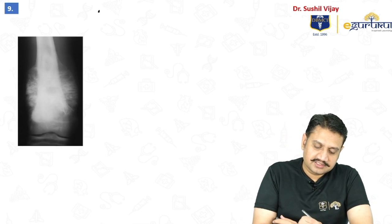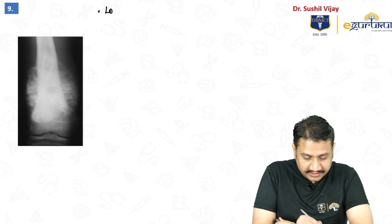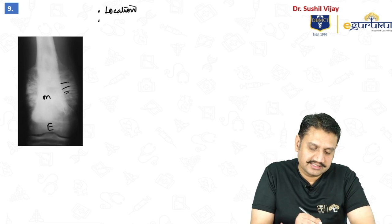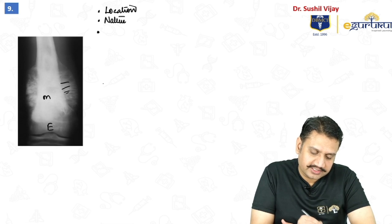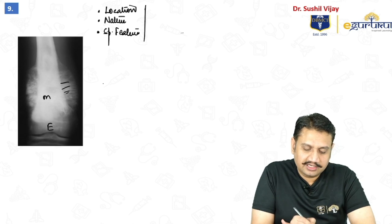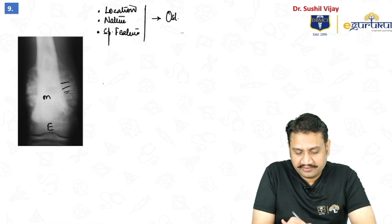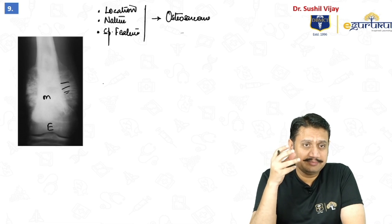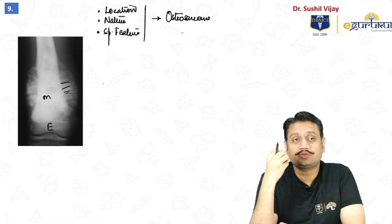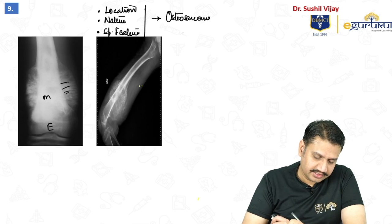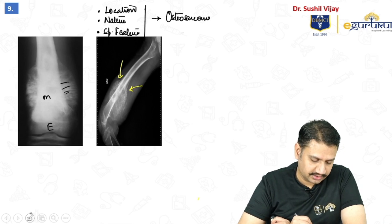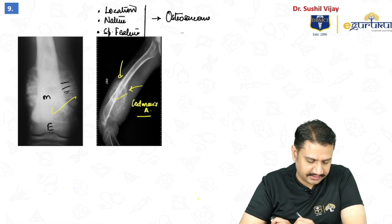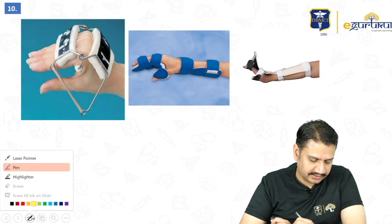Next image: location is the metaphysis — epiphysis is clean. There is a lot of periosteal response, and the special feature is a sunburst appearance. Metaphyseal location, aggressive nature, sunburst appearance — this is only one tumor: osteosarcoma. On the lateral view, the elevation of the periosteum shows the sunburst appearance, and the triangular periosteal elevation is called Codman's triangle.